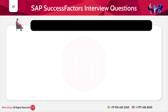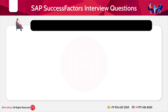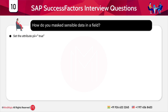The next question is: how do you mask sensitive data in a field? To mask sensitive or private information in a field, you have to set the attribute PI equal to true.